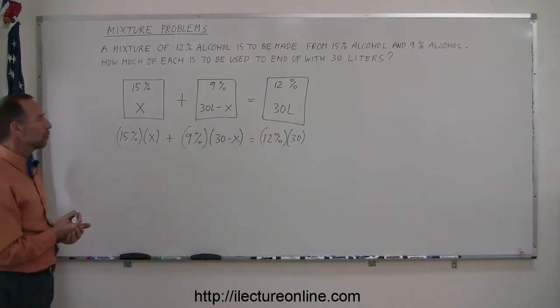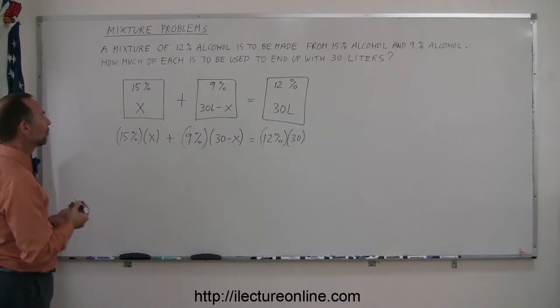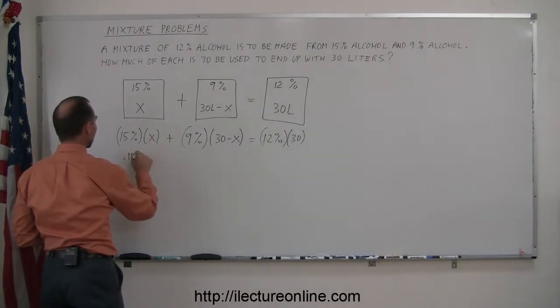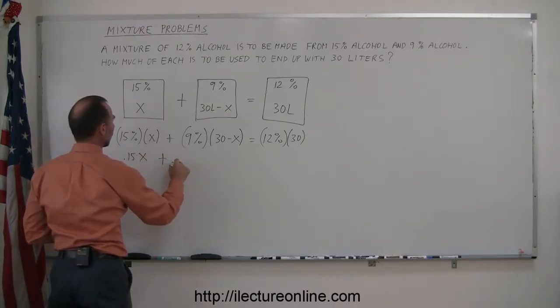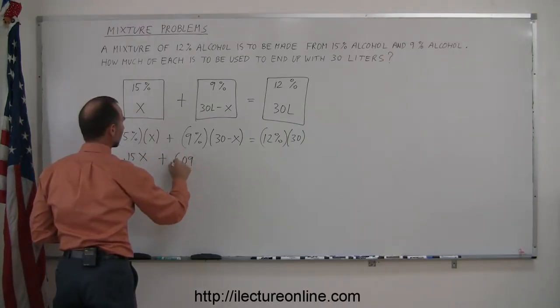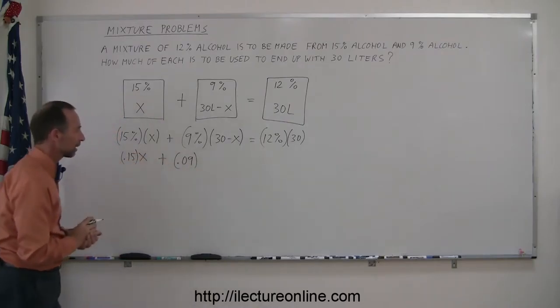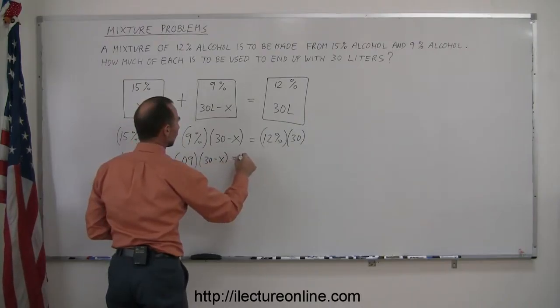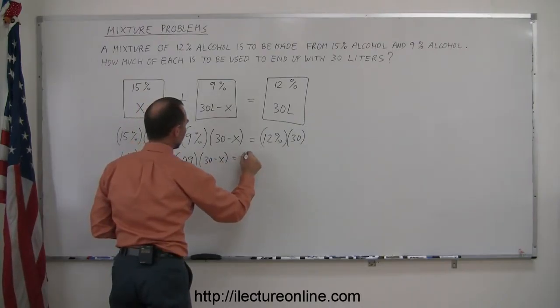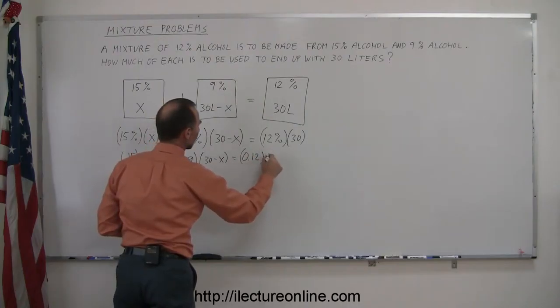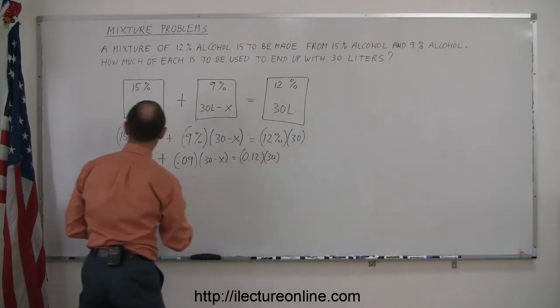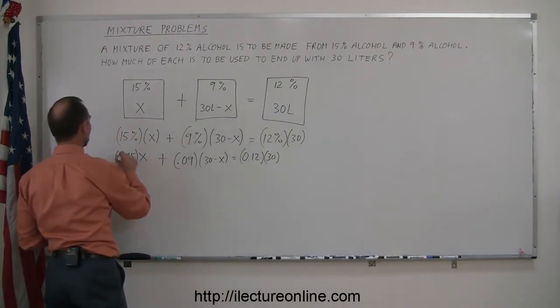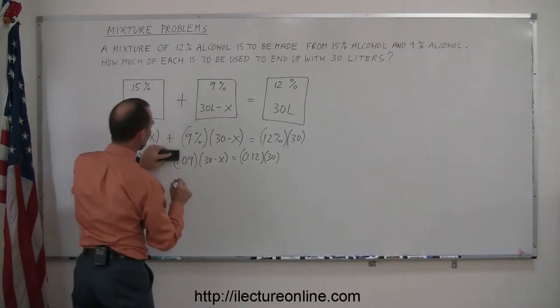The first thing we probably want to do is get rid of the percent and write as a decimal. So we have 0.15 times x plus 0.09, let me put parentheses around it just to kind of keep it clean, 0.09 times 30 minus x is equal to 0.12 times 30. It's probably a better idea that I put a 0 in front of these, so let me do that. It's a little bit cleaner. So 0.15 and 0.09.